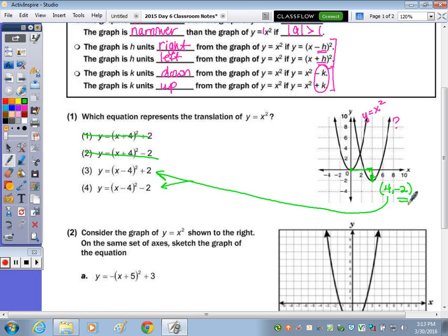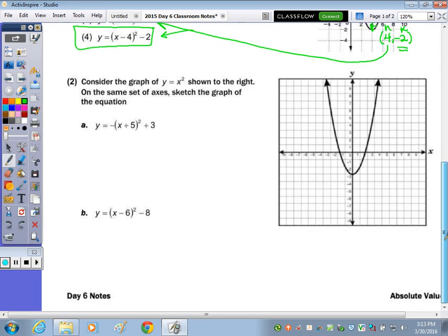So in the equation, remember the x value is opposite. So it's either going to be this one or this one, as it has the minus 4 within the function notation. And then the graph shifted down, or my k rather, is negative 2. So that's going to be choice 4.